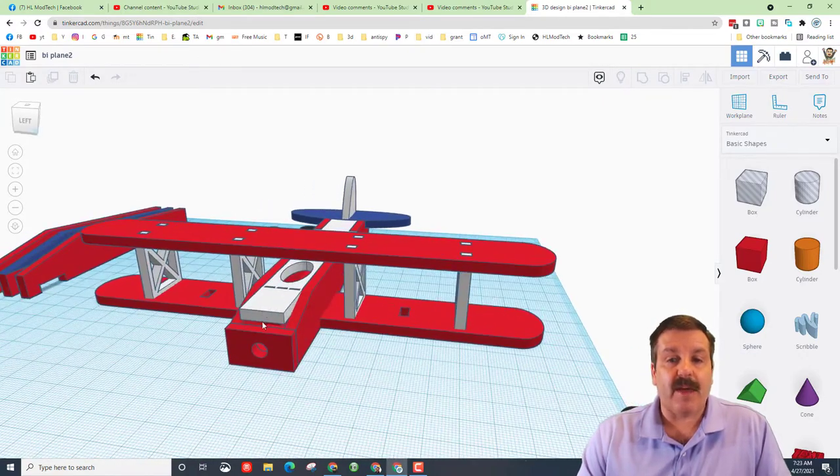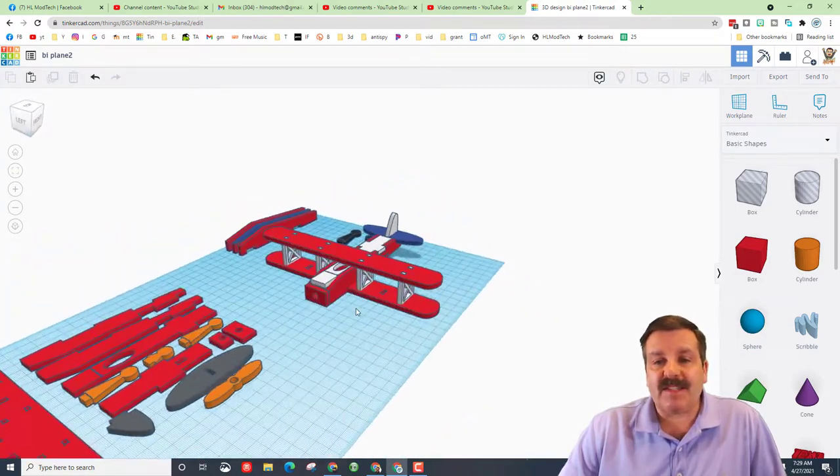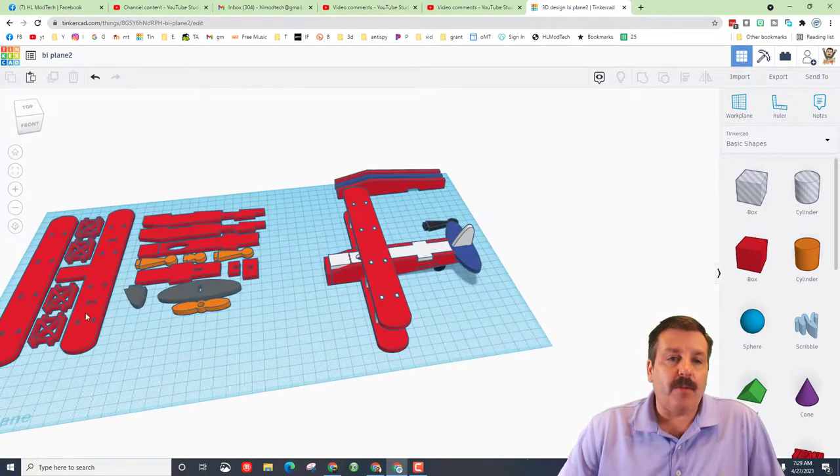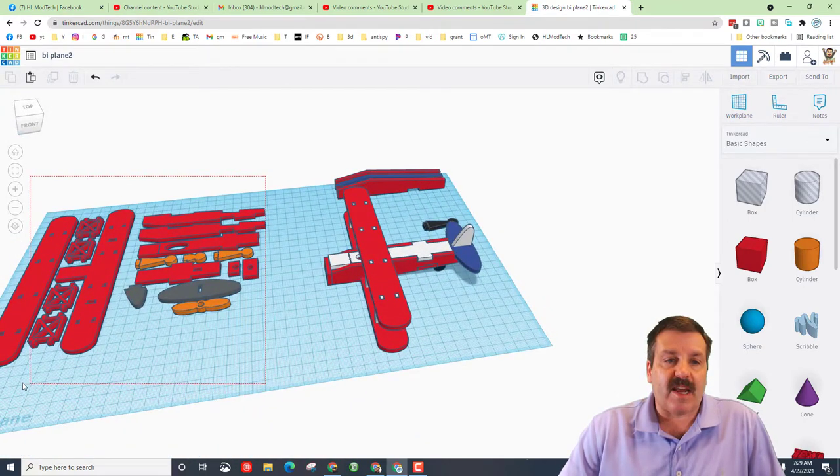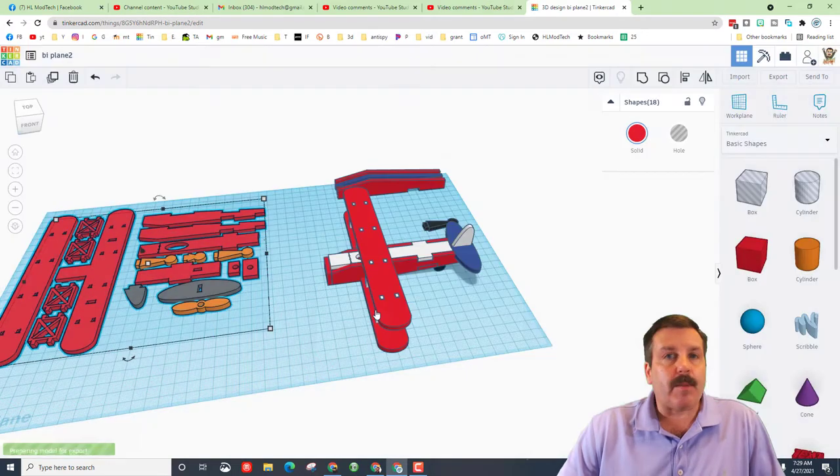So remember, the way I build this is I assemble a version over here where it's standing up, and then I take all the parts and I make the layout so that I can export it as an SVG. I'm going to put this in my STL folder.